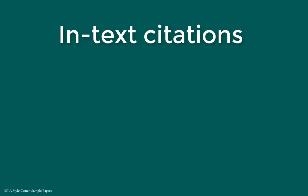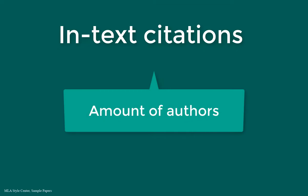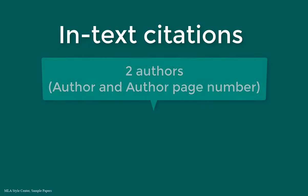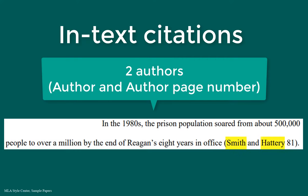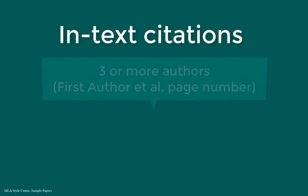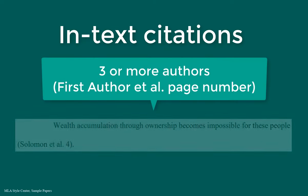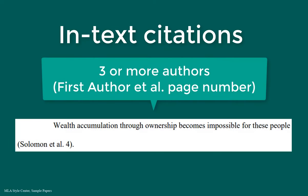There are also differences for how to list authors depending on the amount of authors. If the material you are citing has two authors, you need to include both authors' last names and the word 'and' in between them, and then include the page number. If the material you are citing has three or more authors, only list the first author's name, then include the words 'et al.', and the page number.